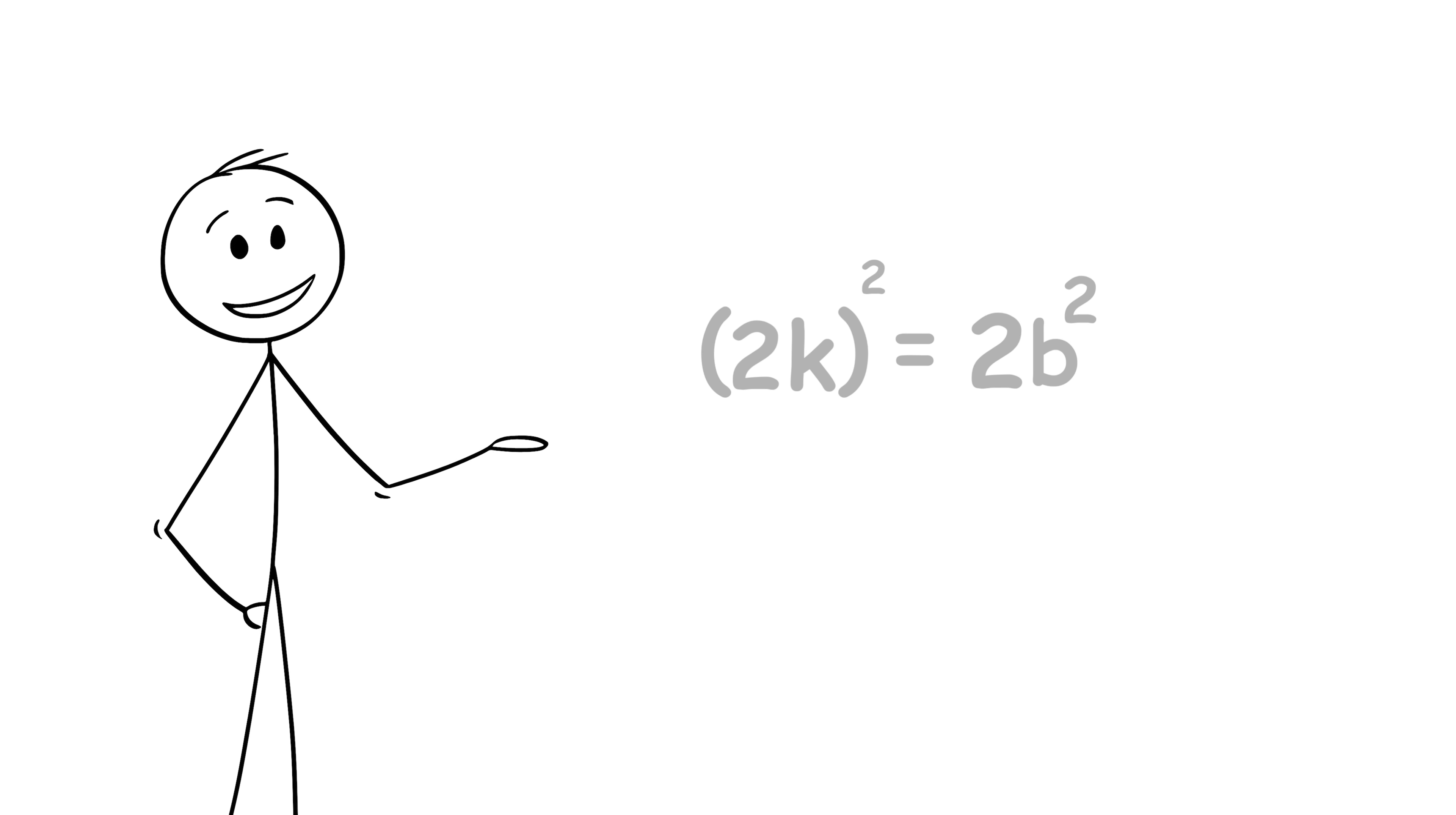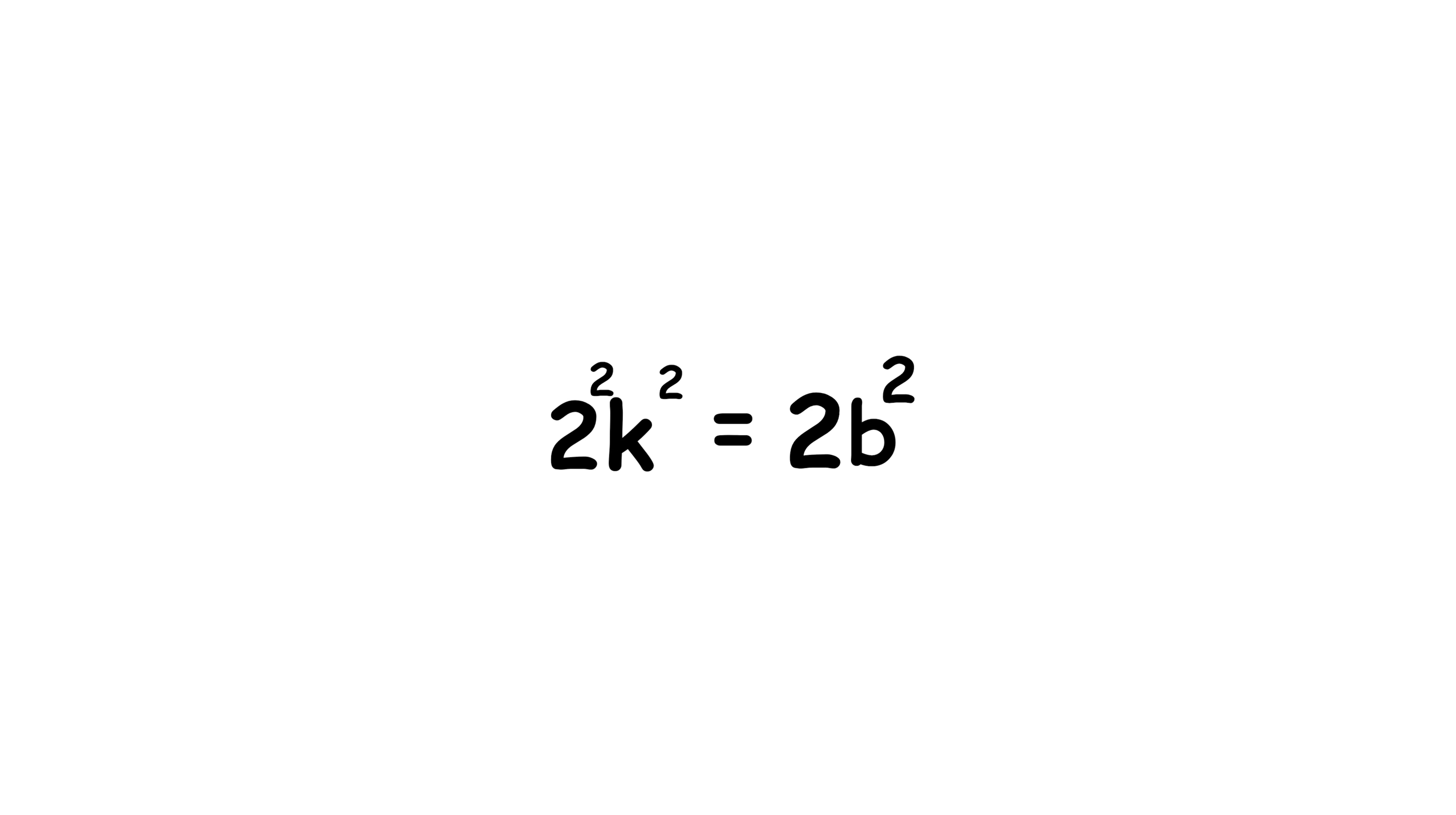Again, we can distribute the exponent into the parentheses using exponent rules. So we get 2 squared k squared equals 2b squared, or just 4k squared equals 2b squared. Next, we'll divide both sides by 2, giving us 2k squared equals b squared.